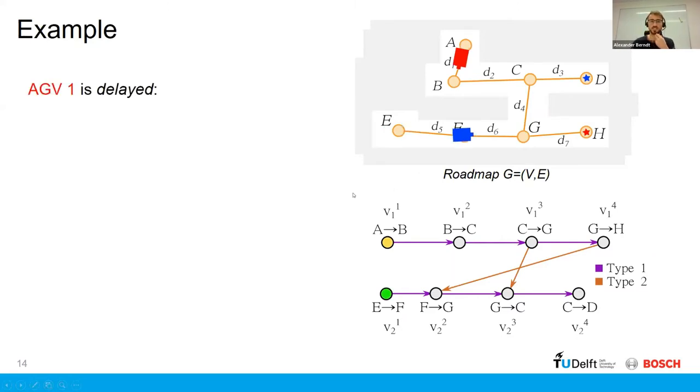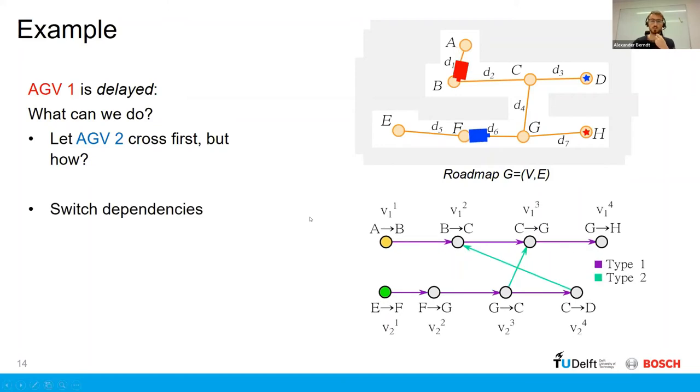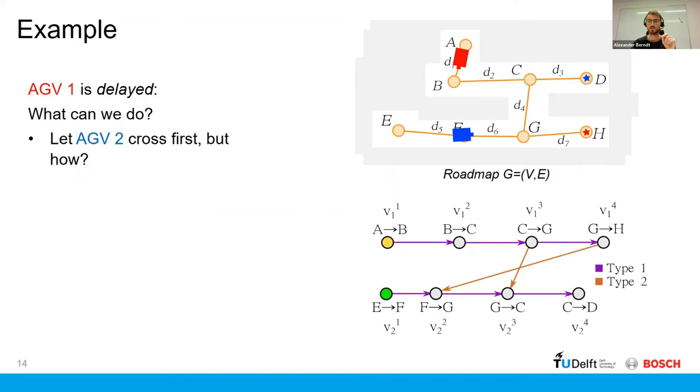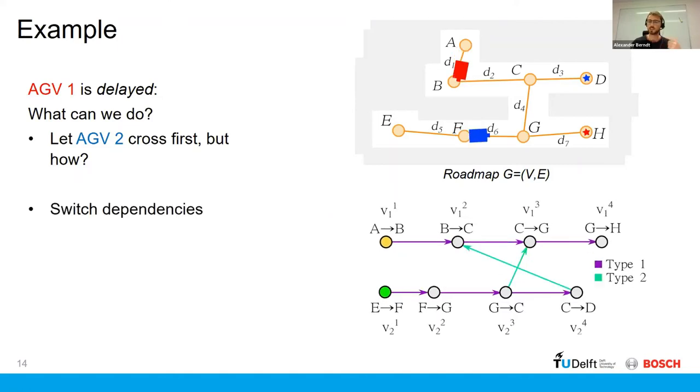So an example of where this would be useful is if we have the case that we just looked at earlier, but now the red AGV is delayed. And similarly, as we said, this blue AGV was initially stopped, but now we would actually like the blue AGV to first cross this section in the roadmap before the red one. And the option here is to switch dependencies. And this basically allows us to allow the blue AGV to continue with its path and the red AGV then to follow afterwards.